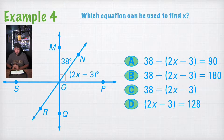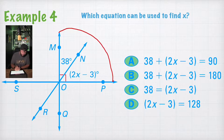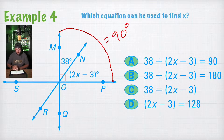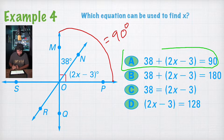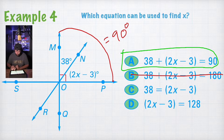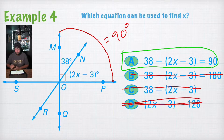Example 4: which equation can be used to find x? So here we have a right angle, and a right angle equals 90 degrees, so this total measure equals 90 degrees. To solve this we would have to add both parts to equal 90. So if we look at option A: 38 plus 2x minus 3 equals 90 — that is right! Option B wouldn't be right because that would have to be a straight line they're solving for, so that wouldn't work. Option C: 38 equals 2x minus 3 — if this was an angle bisector that would work, but it doesn't say it's an angle bisector, so that does not work. And the last one is definitely wrong.